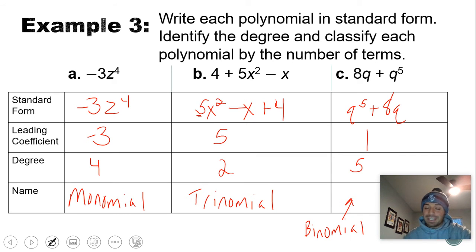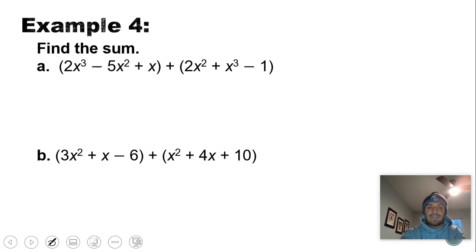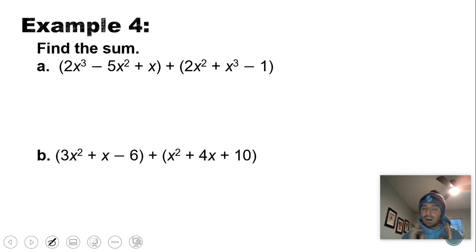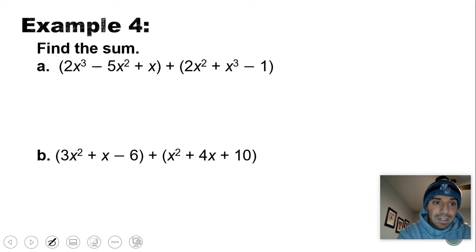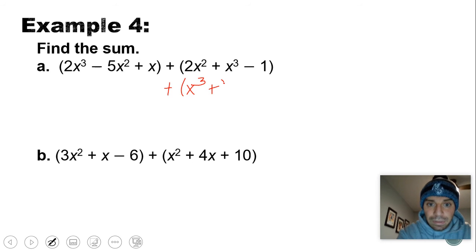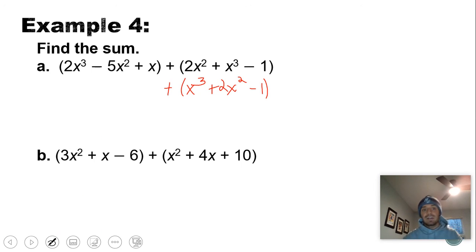You have to be comfortable writing things in standard form, identifying the leading coefficient, identifying the degree, and naming the polynomial. Remember — do not identify the leading coefficient until you've written it in standard form. Now, on to the fun stuff: finding the sum — adding and subtracting polynomials. We'll show a couple different ways: horizontally and vertically.